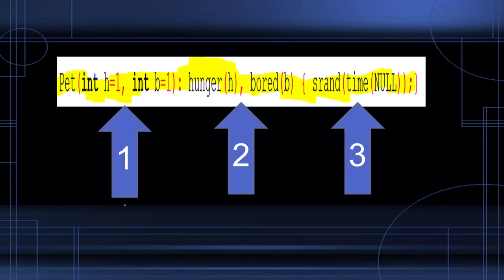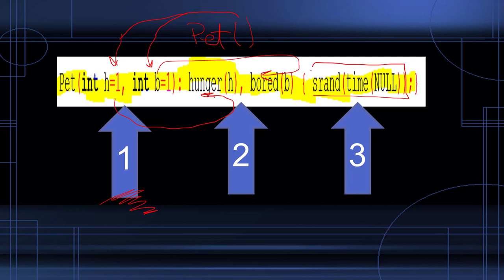Here we have our constructor. The first part is our formal parameter list and you notice I have default values. What does that mean? It means I can just use the word pet or pet brace like this and if both parameters are missing, whatever H is will be passed into hunger and whatever B is will be passed into the variable bored. I do one step here: ask the motherboard for the time which is a giant integer number, feed it to the seed random number generator as a seed. That's what the S stands for, seed to start the random number generator off.